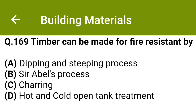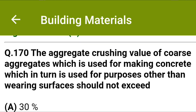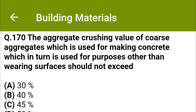Timber can be made fire resistant by: option A dipping and steeping process, option B Sarabale's process, option C charring, option D hot and cold open tank treatment. The correct answer is option B: Sarabale's process.